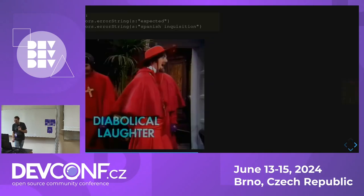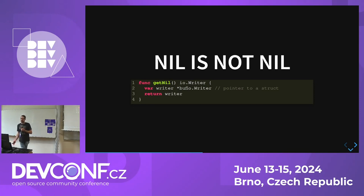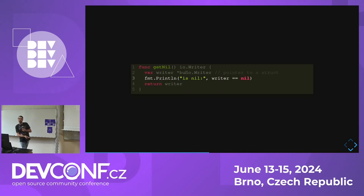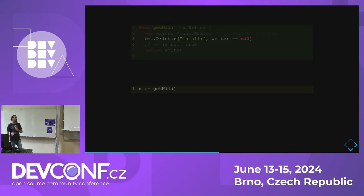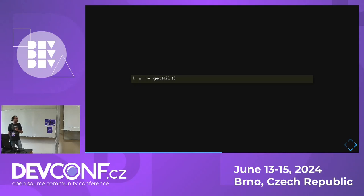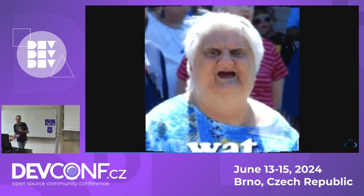Let's talk about occasions when nil is not really nil in Go. Given a function that returns an io.Writer interface, and inside I initialize a variable pointing to a struct that actually implements this interface but I do not put anything there — it's just a nil pointer to a struct. If I add a check, writer == nil, it will say true. But if I call this function, put the result in a variable, and do the same check again, it will return false.